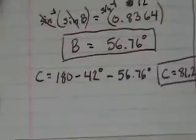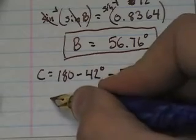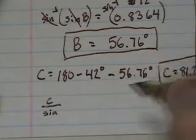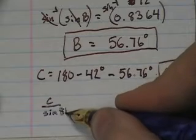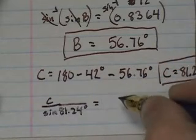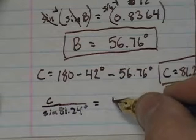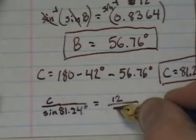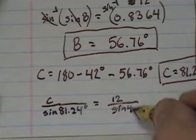So I come down and I write my equation. I have c over sine of 81.24 equals 12 over sine of 42.